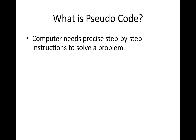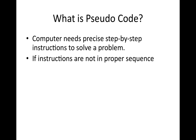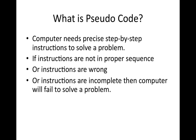Basically, a computer needs precise step-by-step instructions to solve a problem. Computers solve problems by running computer programs, but for that they need precise step-by-step instructions for the problem you want the computer to solve. If instructions are not in the proper sequence, or instructions are wrong, or instructions are incomplete, then the computer fails to solve the problem.